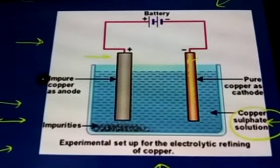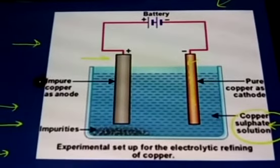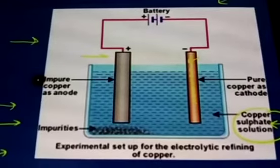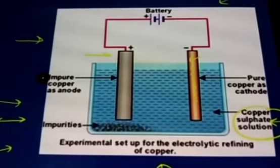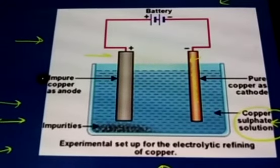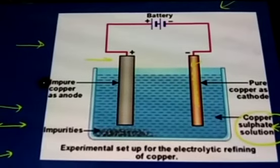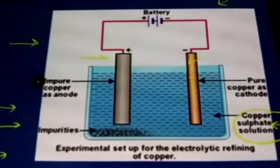Clean copper plates with sandpaper. Rinse with water and dry them. Connect the copper plates to the terminals of the battery and immerse them in copper sulphate solution. As here you can see in the picture. Allow the current to pass for about 15 minutes. Now, remove the electrodes from the solution and look at them carefully. Do you find any difference in any of them?